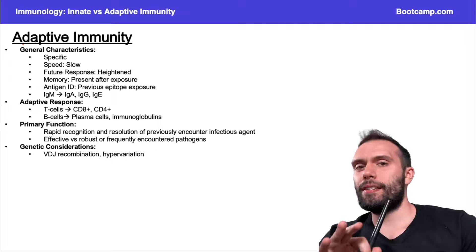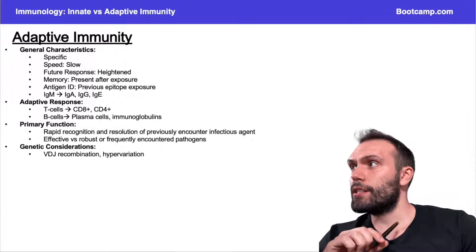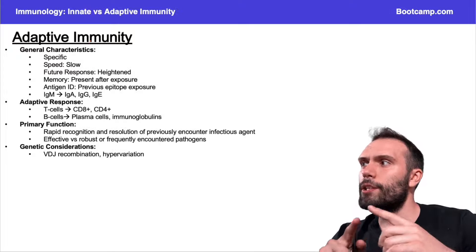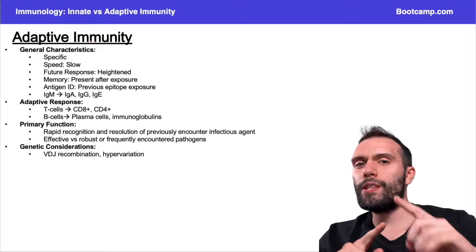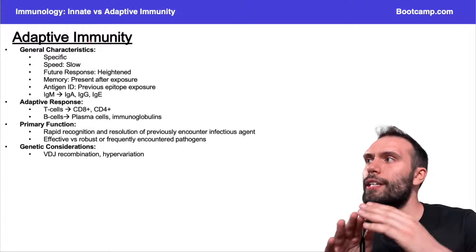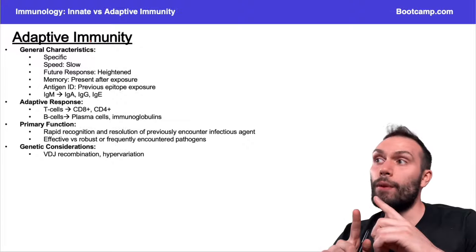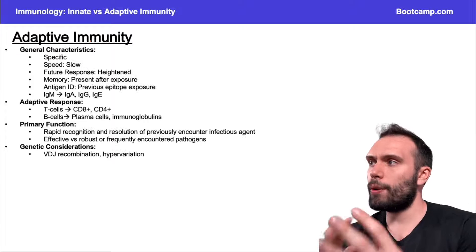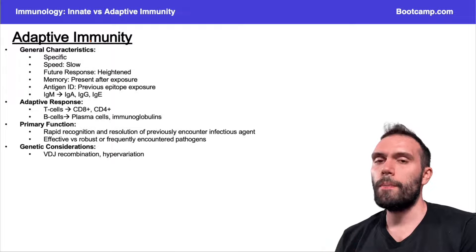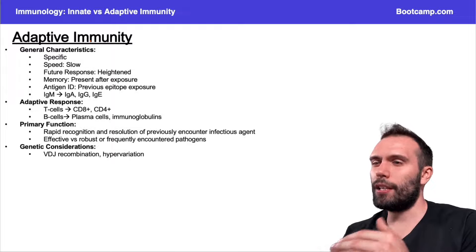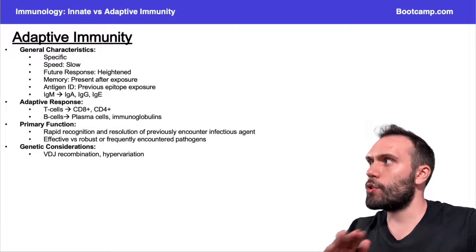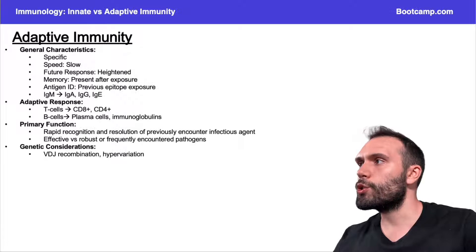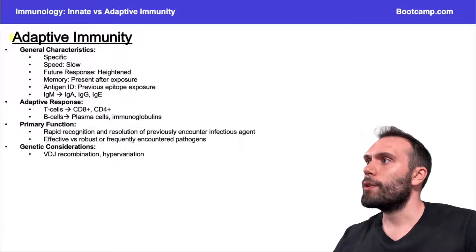Now that we have some basis on innate immunity, let's talk about adaptive immunity. I'm going to go through this slide pretty quickly, then go into how this whole process works — it'll make more sense that way. I'm going to hit the key points fast on this slide, and we'll circle back.